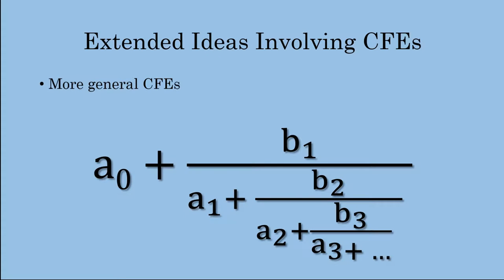We have more general continued fraction expansions here. I have this bolded equation — it's an expression, more generally. We have a0 plus b1 over a1 plus b2 over a2 plus b3, and so on. It's a nested fraction structure, but we're adding this other sequence of b values, which need not equal 1. Everything we've seen up until now has had 1s as the numerators of these continued fractions, but it turns out it can be more general, and we can still make sense of it and get some amazing results, as I presented in the intro.